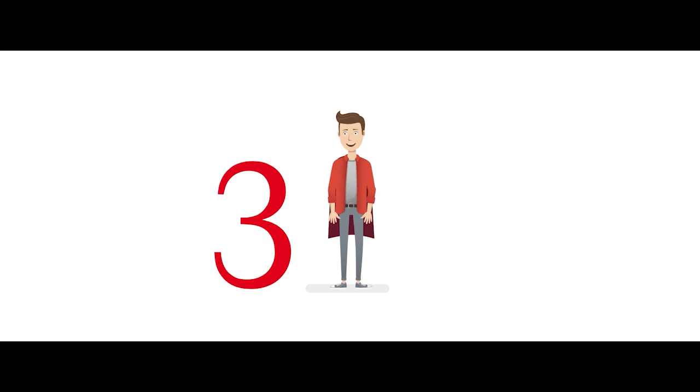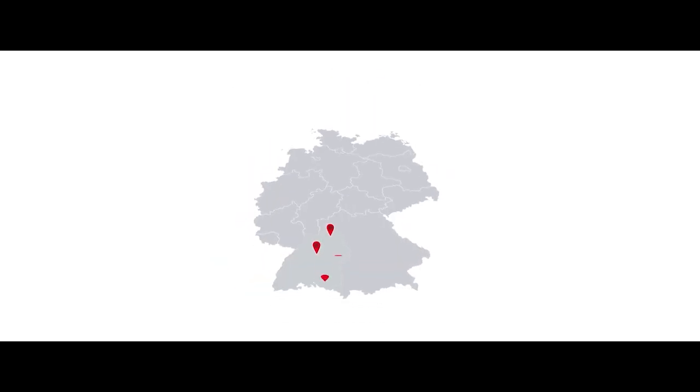Following this rule of three, students complete their dual study bachelor in three years at one of 12 different locations across Baden-Württemberg.